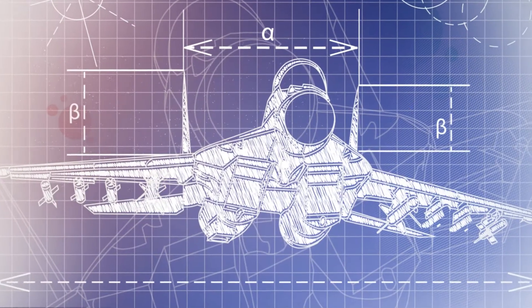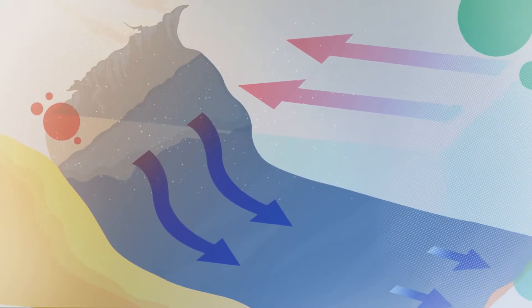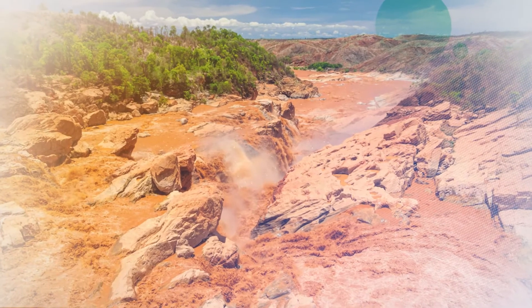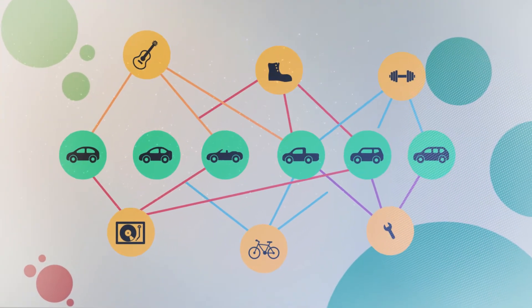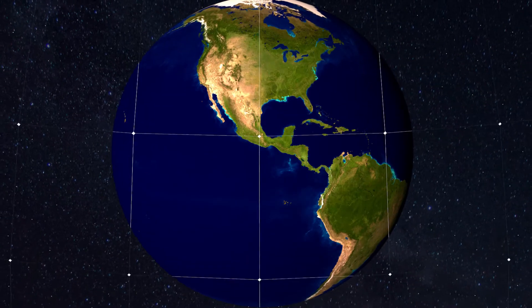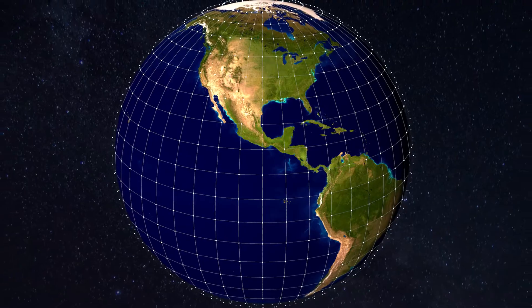Scientists use models to represent a number of things such as objects, concepts, or systems in order to gain a better understanding of them. But the term model can mean many different things, from a physical model of a watershed to examine the movement of sediment in a river, to a statistical model of the relationship between consumers' interest and the type of vehicle they buy. In the case of a global climate model, we're referring to a numerical model that runs on a powerful supercomputer.